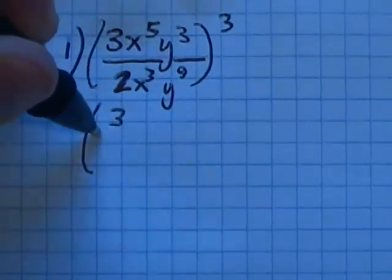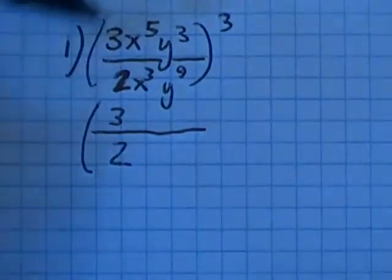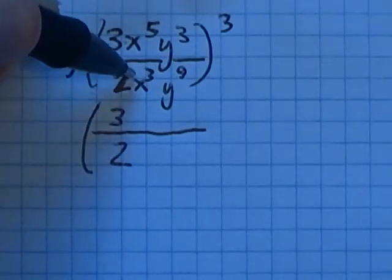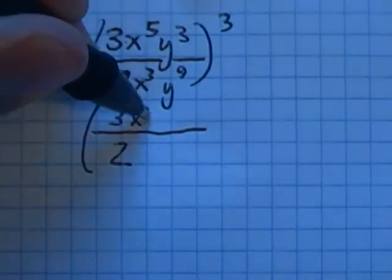So let's see, 3 over 2, no division I can do there. x to the 5th over x cubed. These 3 x's cancel out 3 of these x's, leaving me 2 of them.